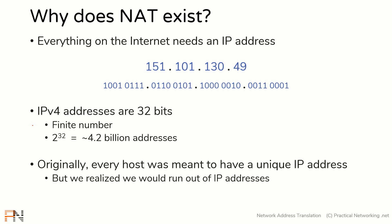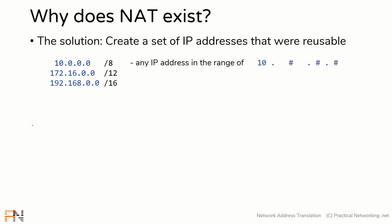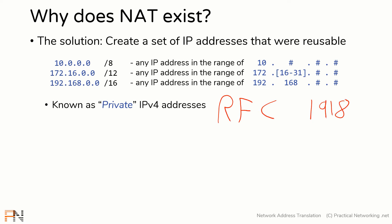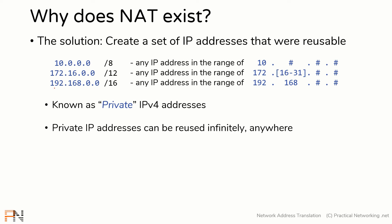How does NAT do that? What NAT does is it creates a set of IP addresses that are reusable — specifically these addresses: the 10.0.0.0/8 space, the 172.16.0.0/12 space, and the 192.168.0.0/16 space. These addresses are referred to as private IPv4 addresses, also sometimes called RFC 1918 addresses, because that document formalized them as private. These private addresses are reusable infinitely anywhere in the world, so the problem of running out of IPv4 addresses goes away.